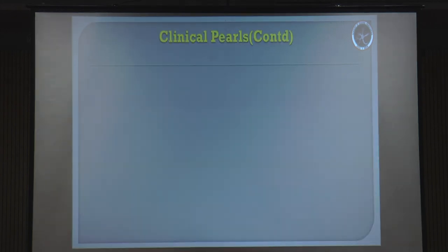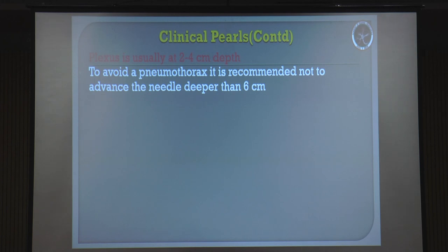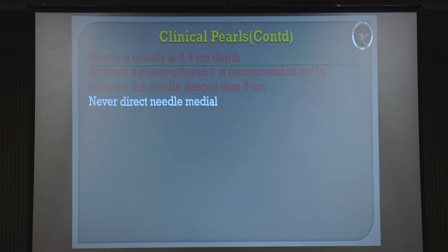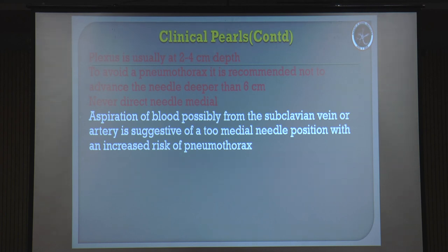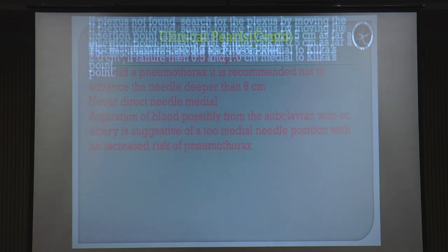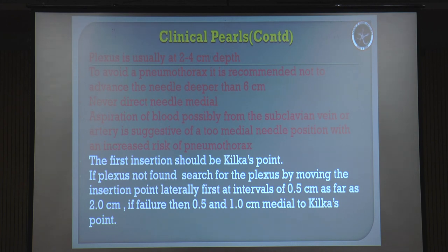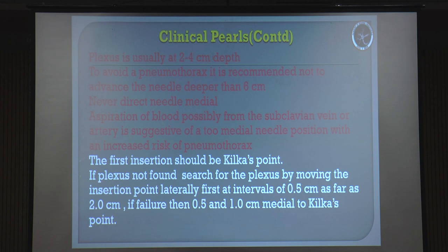Accurate identification of the needle insertion point is required. The plexus is usually at a depth of 2-4 cm. Don't go beyond 6 cm, because you can cause pneumothorax. Never direct your needle medially - never, ever. If blood is aspirated, it means you are too medial. Once blood is aspirated, stop - don't go beyond it or you will enter the vessels. The first insertion point should be the Kilka point, which is the midpoint. If you don't find the plexus, move your insertion 0.5 cm lateral first, up to 2 cm. If you still don't find it, then go medial - otherwise don't go medially.